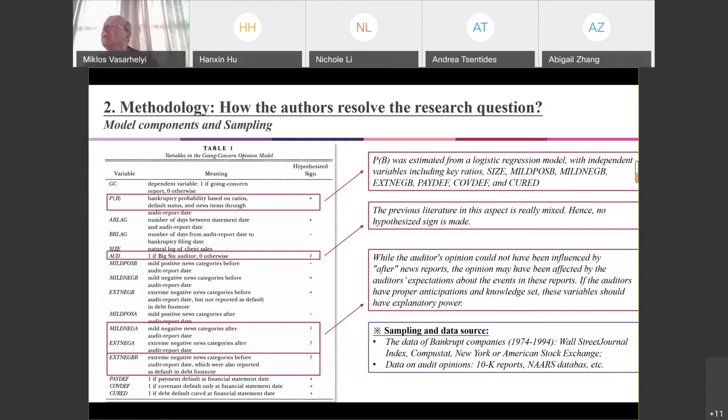After knowing the what and why, let's focus on the how. We should look at the methodology utilized by the author and how the authors resolved the research questions. First, let's look at the model components and sampling. Basically, this paper uses a logistic regression. The dependent variable is a binary variable, which is the going concern opinion.